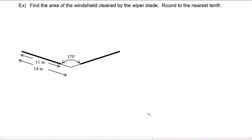In this example, you're asked to find the area of the windshield cleaned by the wiper blade. So what this is a picture of down here is the arm of a wiper blade. The heavier black line represents the rubber blade of the wiper, and of course it goes back and forth across the windshield and it'll clean an area of the windshield.